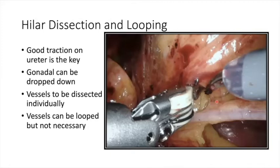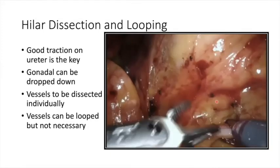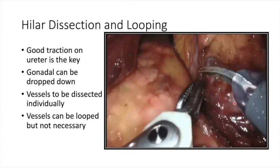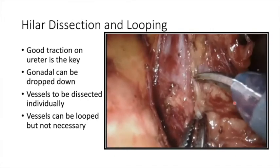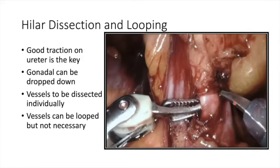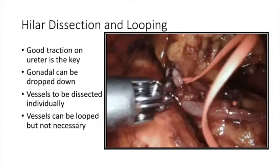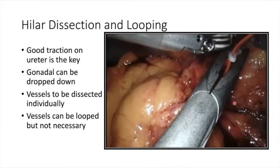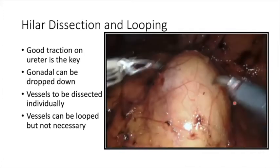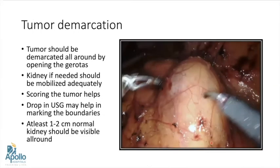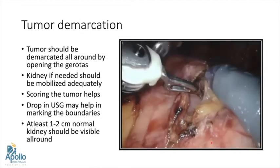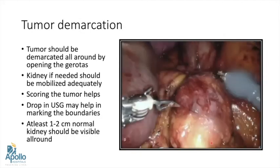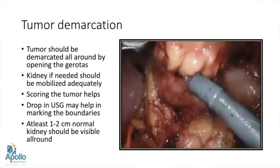Traction on the ureter helps in dissecting the vessels. The gonadal vessels can be dropped down, especially when doing partial or radical nephrectomy. Both artery and vein should be individually dissected based on preoperative angiography. Looping the vessels is a personal preference — for complex parcels I usually prefer looping. The next step is tumor demarcation: remove the fat overlying the tumor and open Gerota's fascia all around for at least 1–2 cm.